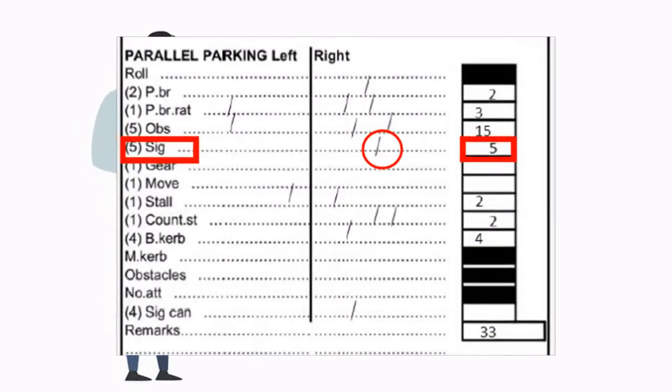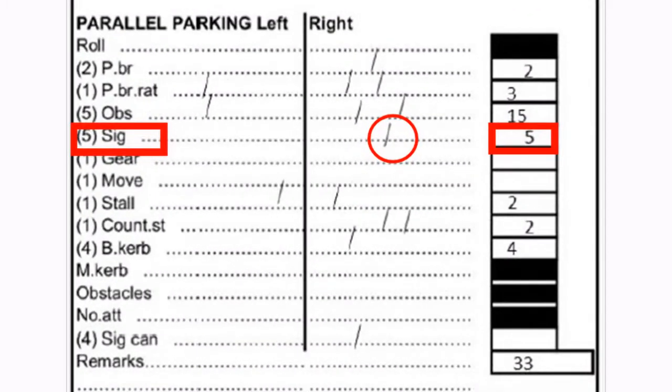Next, the student got five points scored for not putting the indicators on. Always remember to put on the indicator to show the examiner where you're about to go.